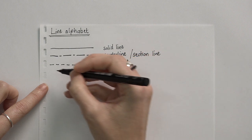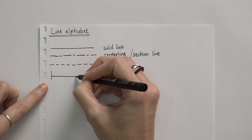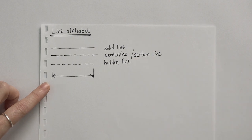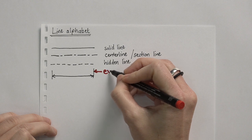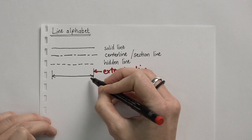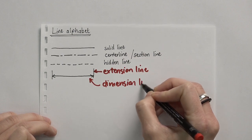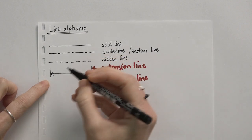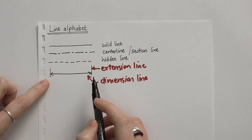The last two lines are extension lines, and between two extension lines we usually find a dimension line. Extension lines run from a component away from the component, and then we have dimension lines to indicate the dimension of a component.